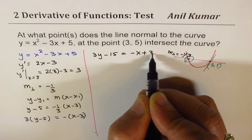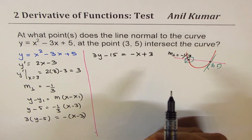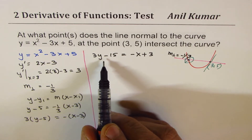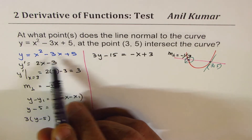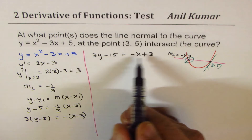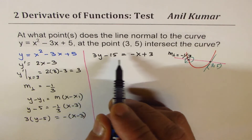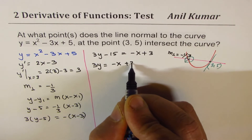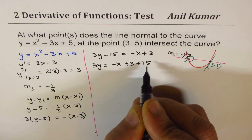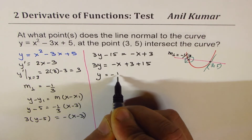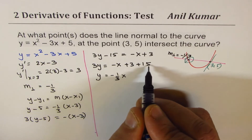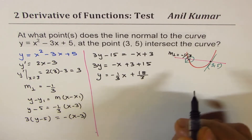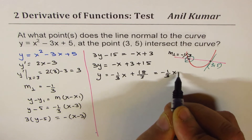Rearranging the equation of the normal line: 3y = -x + 3 + 15, so 3y = -x + 18. Dividing by 3, we get y = -x/3 + 6. This is the equation of the normal line at point (3, 5).